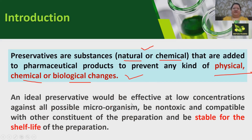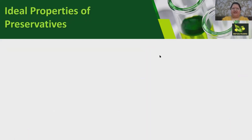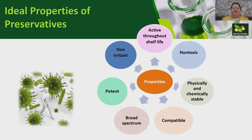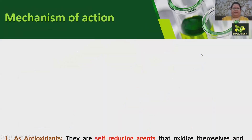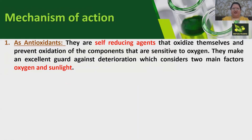Ideal preservatives should be effective at low concentrations against all possible microorganisms — that is, they should have a broad spectrum. They should be non-toxic and compatible with all other constituents of the dosage form or preparation, and most importantly, they should be stable for the shelf life of the preparation. In summary, ideal preservative properties include being non-irritant, non-toxic, physically and chemically stable, compatible, broad spectrum, and potent throughout shelf life.